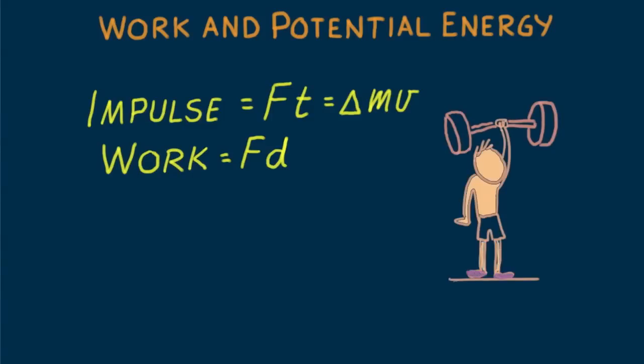For example, when you lift a barbell, you push upward and it moves a vertical distance upward. Force and distance moved are in the same direction. So we say you do work on the barbell. The amount of work equals the force it takes to lift it multiplied by the distance it is raised.